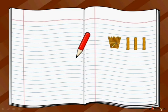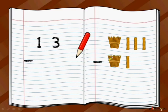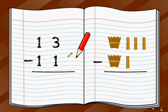Here we have a bundle of sticks which is 10 and 3, so the number is 13. Next, a bundle of sticks and 1, so the number is 11. So it is 13 minus 11.